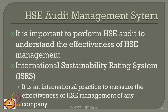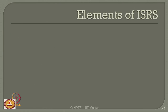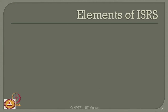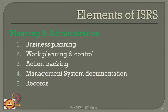ISRS has different elements to assess safety. The first element is leadership: how the company's leadership is addressing safety assurance — the purpose and values, goals of leadership, policy involved, strategy followed, stakeholder engagement, business processes, business risks, accountabilities produced to auditors, and management commitment for better production.